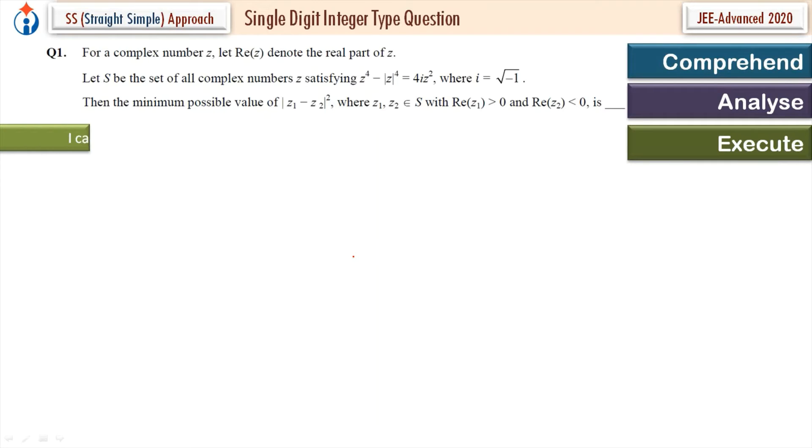So I take Z is equal to X plus iota Y. This is the equation. Z minus Z bar times Z plus Z bar is equal to 4 iota. And Z minus Z bar is equal to twice iota Y, Z plus Z bar is equal to 2X. That is equal to 4 iota. So we get XY equal to 1.